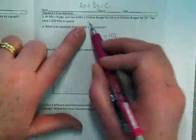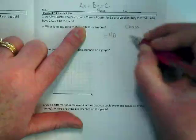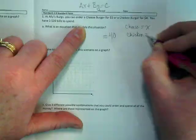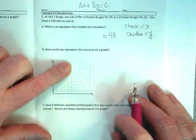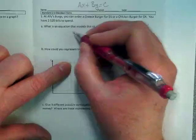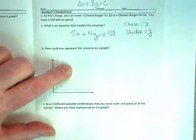And I'm going to say that a cheeseburger is an x and a chicken burger is a y. How am I going to set that equation up then? 5x plus 4y equals 40.